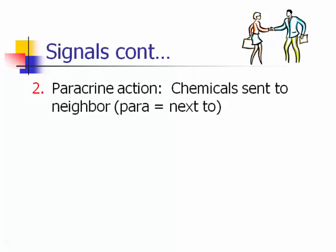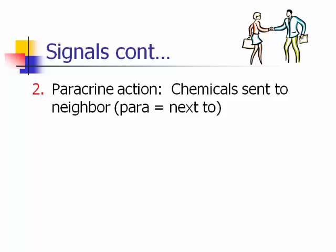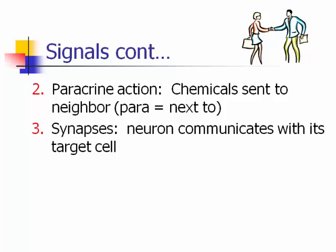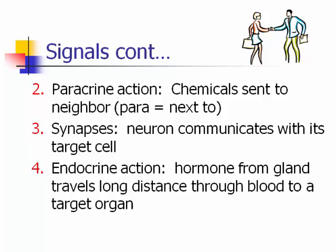Paracrine action sends chemicals to a neighboring cell. Synapses are neurons communicating with a target cell, which is very fast. Endocrine action involves hormones from a gland traveling through the blood to a distant organ — this takes much longer, since it can take a whole minute for blood to circulate from the heart to the foot. After the first exam, we'll cover hormones and the endocrine system in more detail.